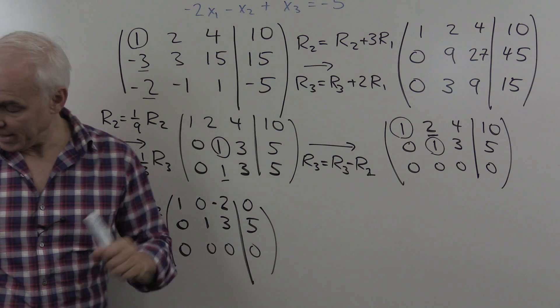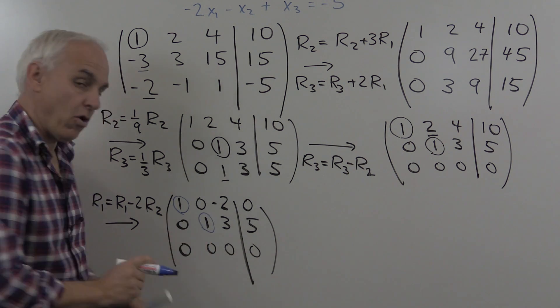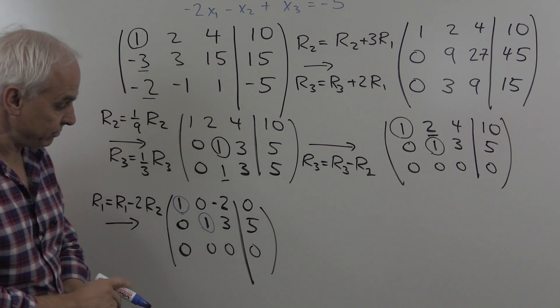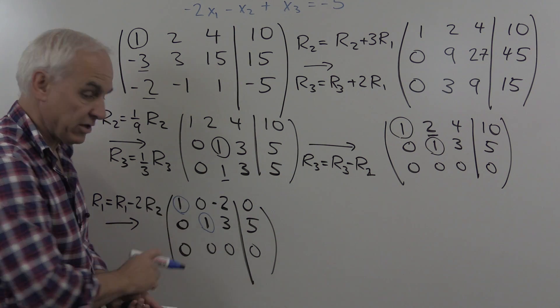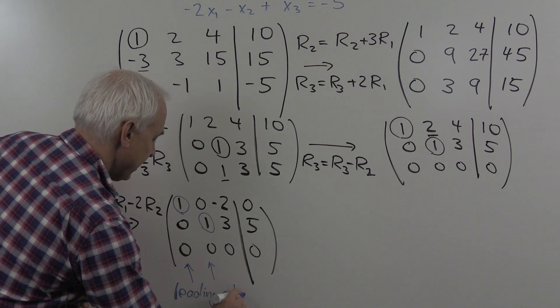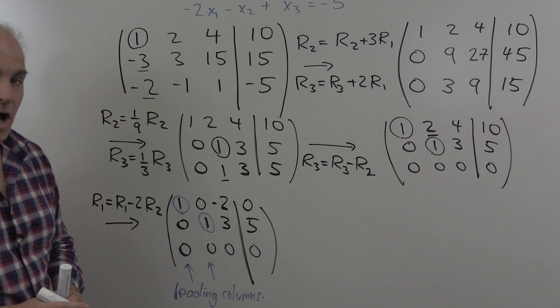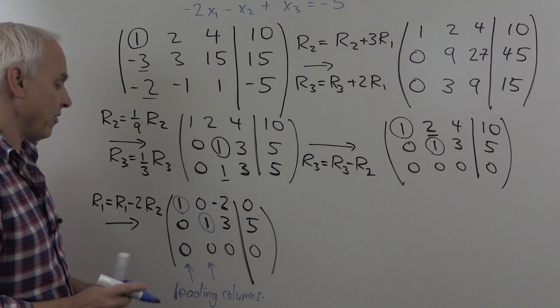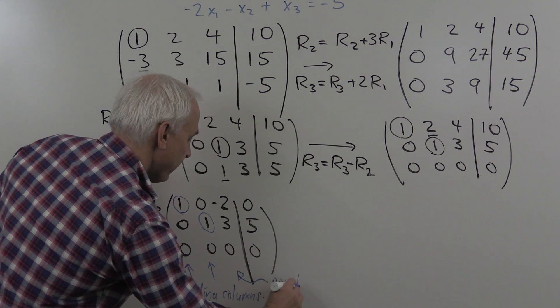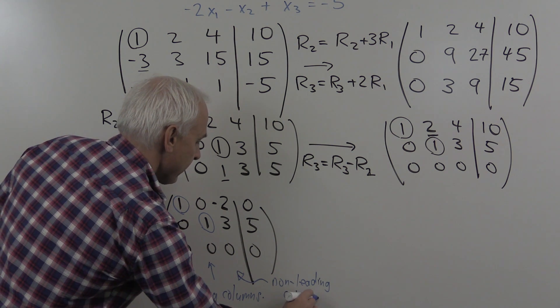At this stage here, we have everything in fully reduced row echelon form. We have the leading entries are all 1. The leading entries are staggered successively below and to the right of each other. And there's nothing but zeros in each one of those leading columns. They're the columns containing our leading entries. And this one here is a non-leading column on the left-hand side.